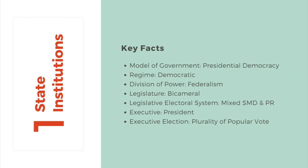Let's start by taking a look at Mexico's state institutions. We should have a glance at some of the key facts of Mexico's system of government. First, it's important to know that Mexico is a presidential democracy. For a good chunk of its history, Mexico really only had one political party that dominated its political system called the PRI. Today, Mexico is quickly becoming a vibrant and competitive democracy. Mexico is constitutionally federal and is made up of 31 states and its capital, Mexico City. It has a bicameral legislature that uses a mixed electoral system, and Mexico has a president who is elected by a plurality of the popular vote.